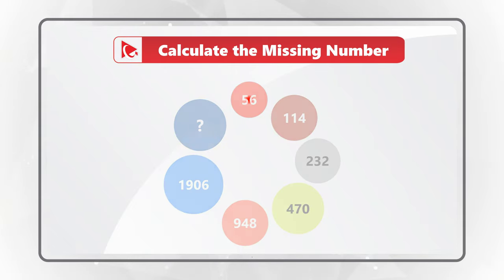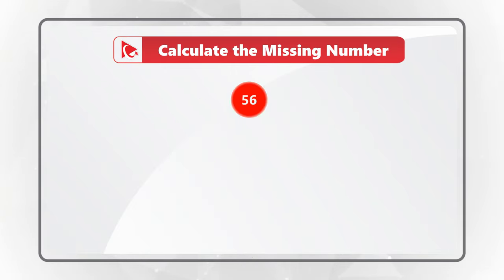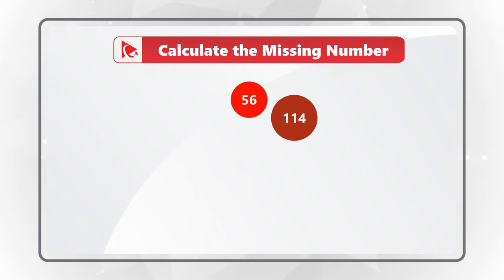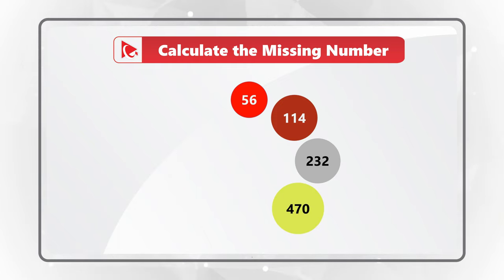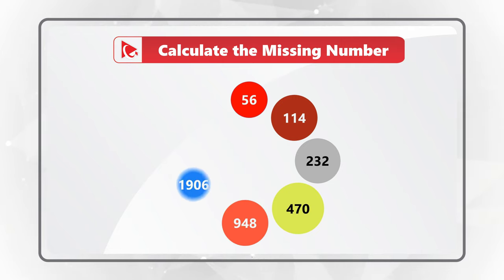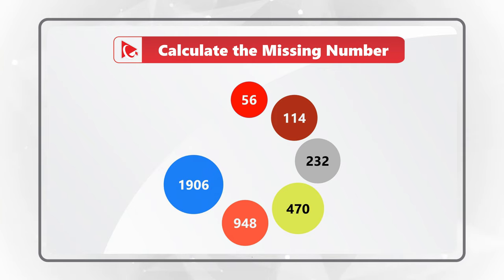The sequence starts with the red circle with the number 56 inside. Next circle has number 114. Following it, circle with the number 232. Then circle with the number 470. Then circle with the number 948. Then follows the circle with the number 1906. And then comes the circle with the missing number.